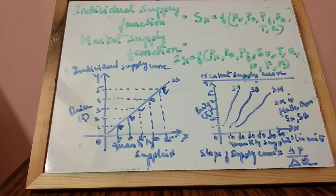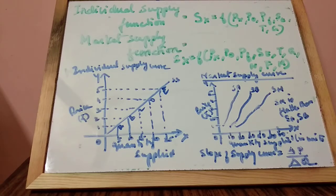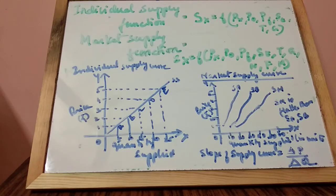Horizontal summation means: if firm SA supplies 5 units at Rs. 1, and firm SB supplies 10 units at Rs. 1, then market supply is 5 + 10 = 15 units. If there are 3 firms, the units supplied by all 3 individual firms are added together to get the market supply.